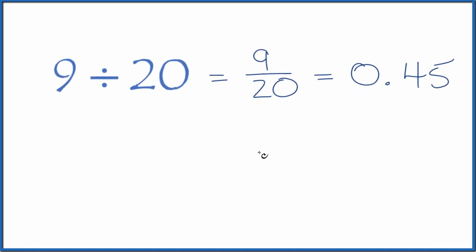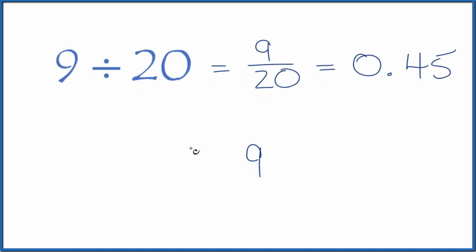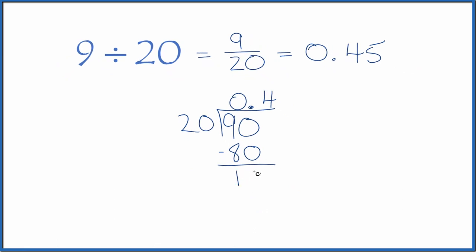You could also do this longhand. You could take 9, see how many times 20 goes into 9. So 20 doesn't go into 9, but we could call this 90 if we put a zero and a decimal point here. 4 times 20, that's 80. Subtract and we get 10.